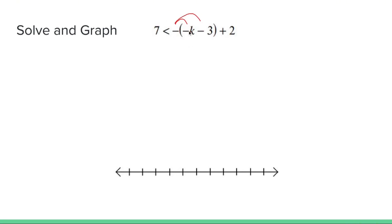The negative of a parentheses just means you flip the signs inside the parentheses. Negative negative k is positive k. Negative negative three is positive three.